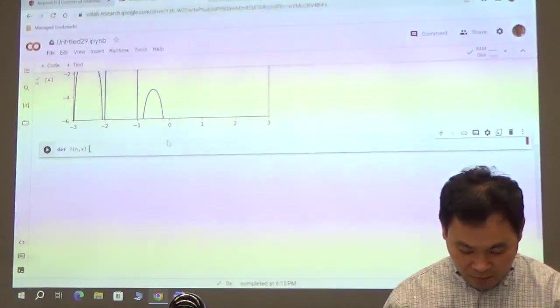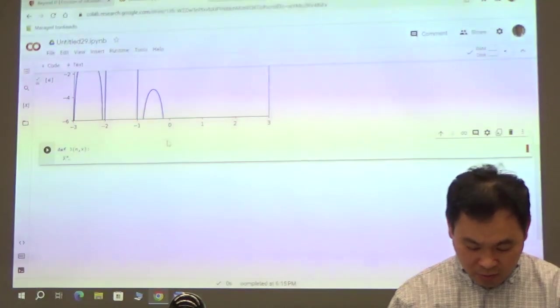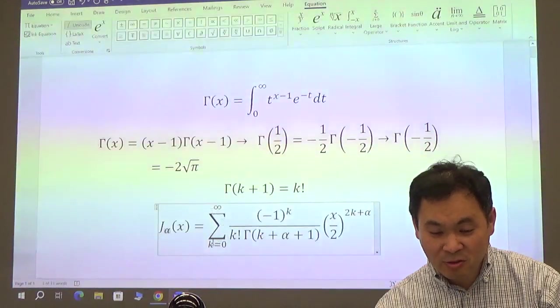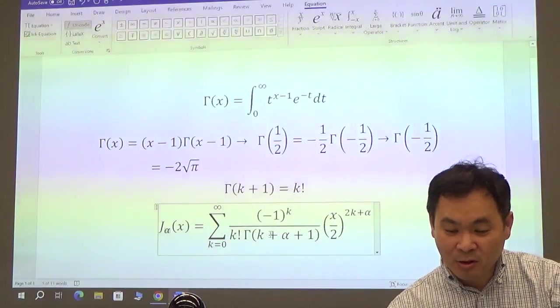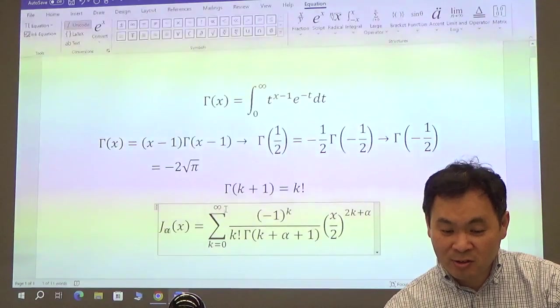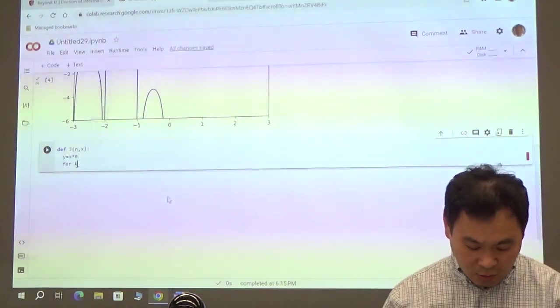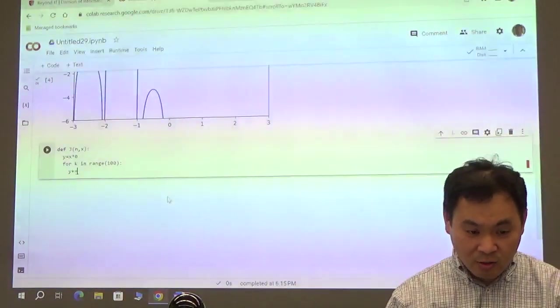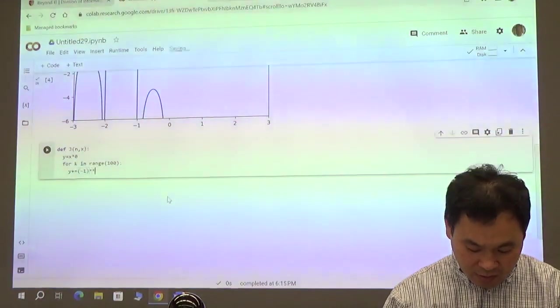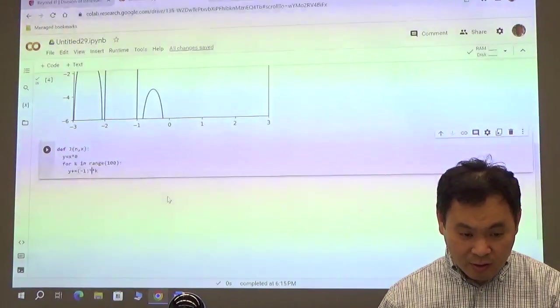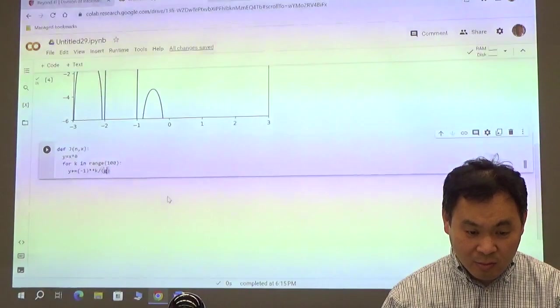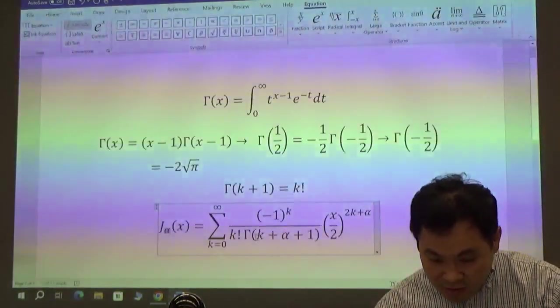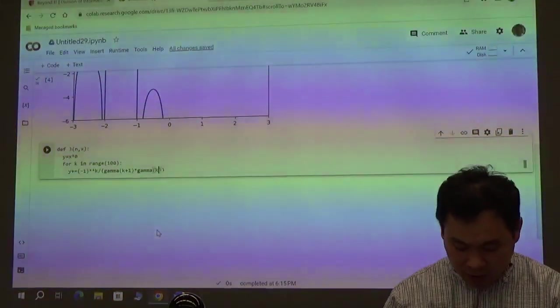So let's write a Bessel function. Define J of (n,x), where n is the order, this alpha here, I'm calling it as n because we're only going to plot it for integer n's. So let me prepare y as 0. So y is x times 0. And for this summation, this summation in Python code is exactly like the for loop. You're just adding up all these things where k goes from 0 to some number. We can't go to infinity because then the program wouldn't stop. So let's just go for the first 100 terms. So for k in range 100 terms.